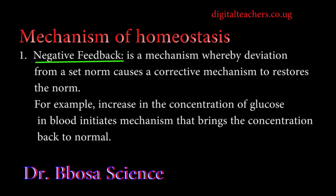Mechanisms of homeostasis. One: negative feedback is a mechanism whereby deviation from a certain norm causes a corrective mechanism to restore the norm. For example, an increase in the concentration of glucose initiates mechanisms that bring the concentration of glucose back to normal.